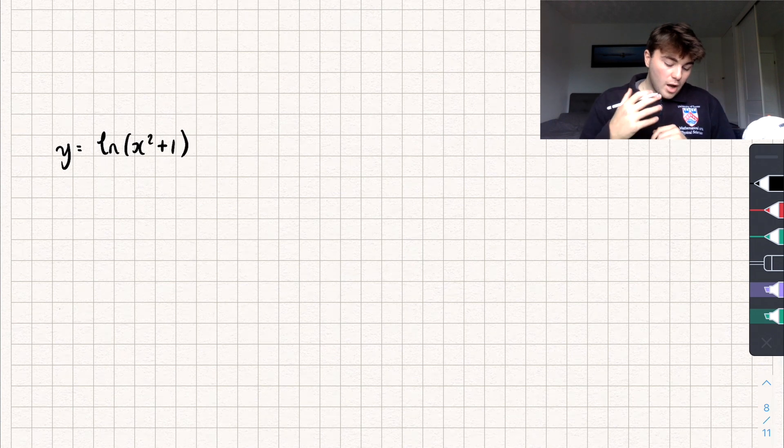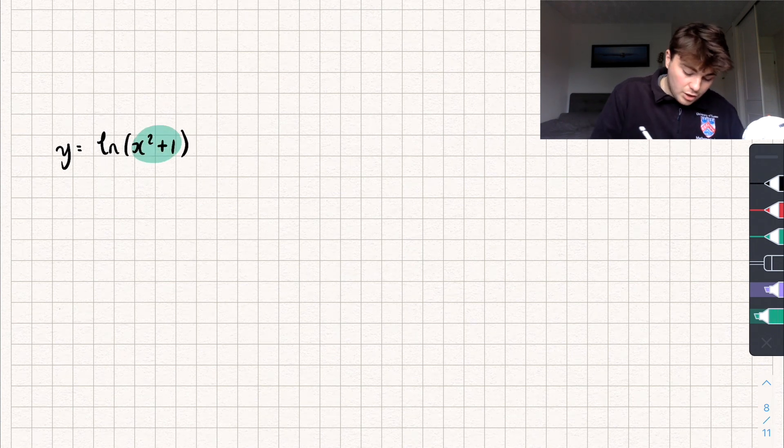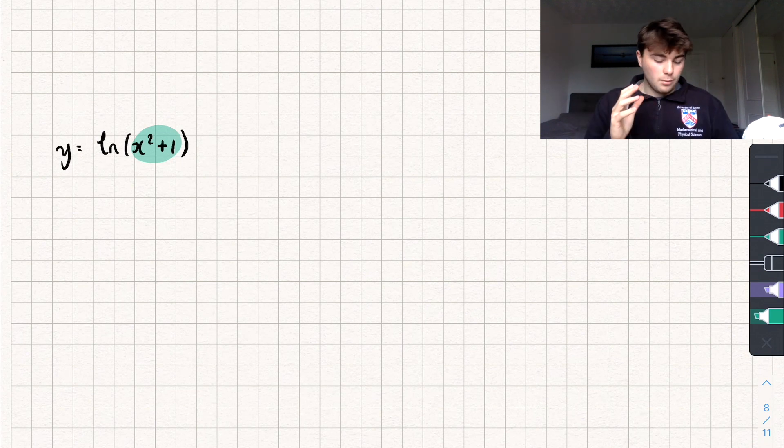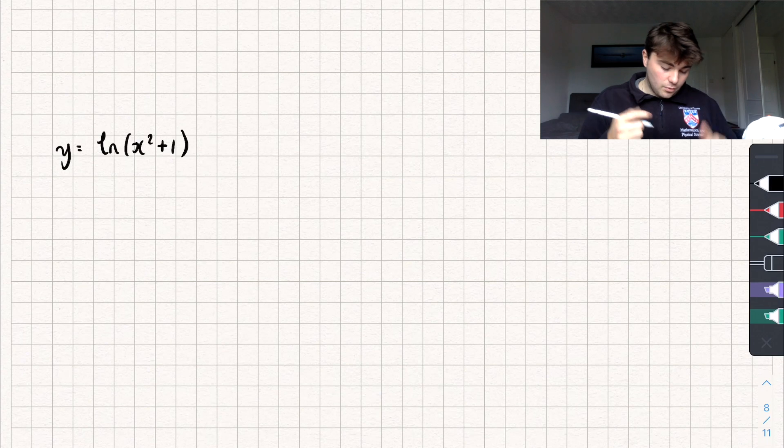So we've got here y equals the natural log of x squared plus 1. So you can see here we've got a function of x inside the logarithm. And so to solve this we're just going to use the chain rule to find its derivative.